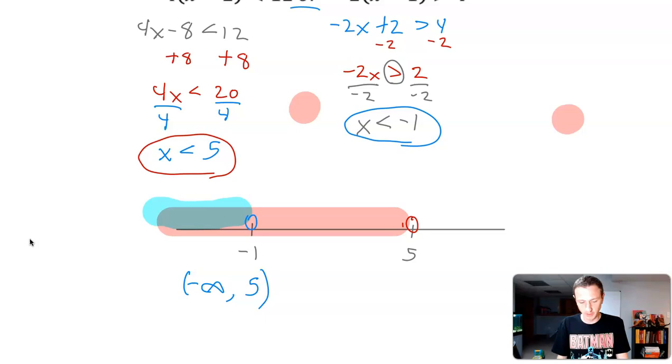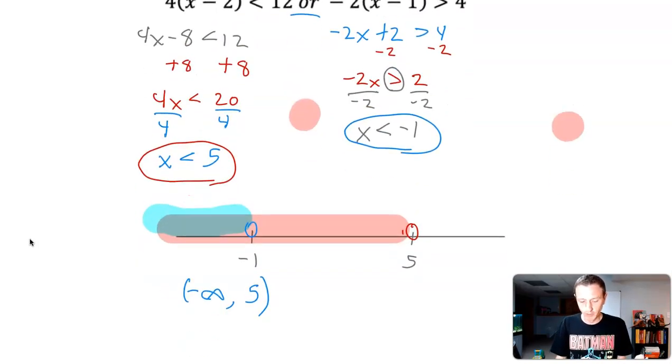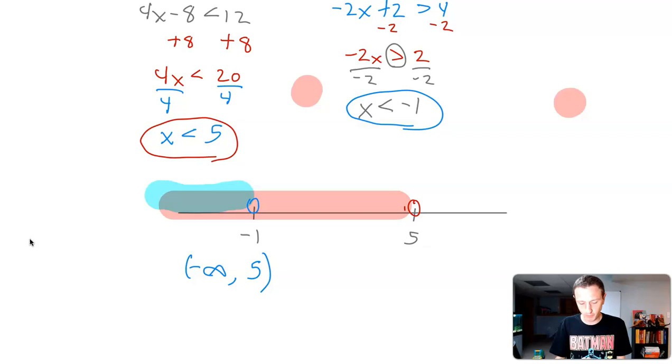Because it could fall into this part. A potential x value could fall into here and make a true statement for one or the other. A potential x value can fall into this only red highlighted zone and make a true statement for one of the inequalities. So we have to keep in mind when we're talking about the word or. It could be one or the other. If it was the word and, we would only go up to negative 1. We would only go up to there because it has to make both of them true.